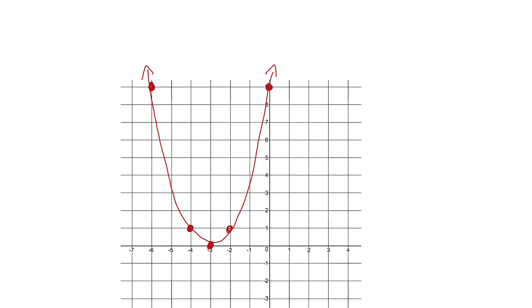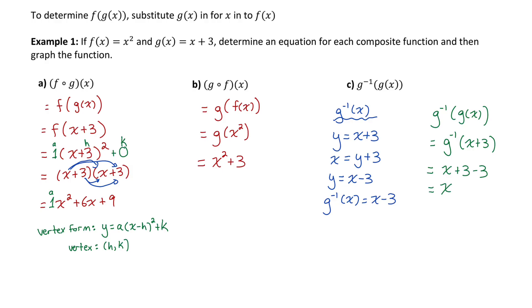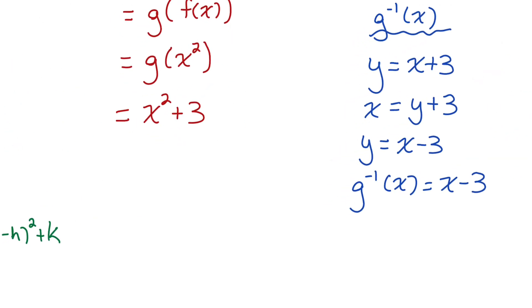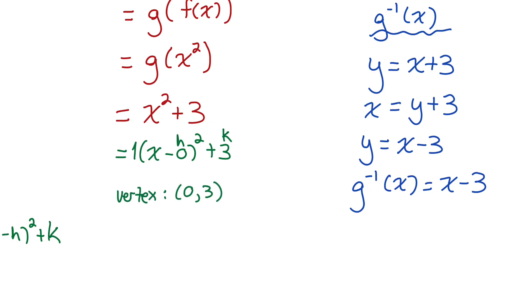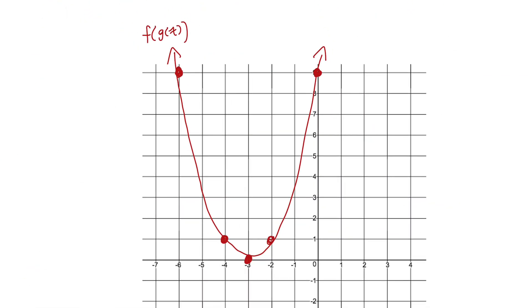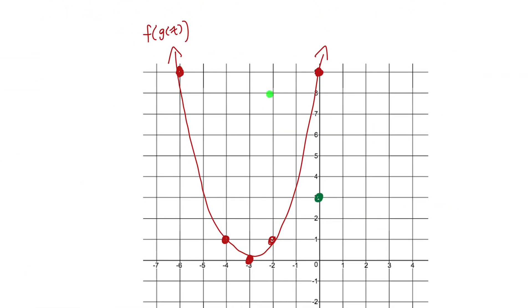That was the graph of f of g of x. Now let's graph the second one, g of f of x, which is the quadratic x squared plus 3. If I write that in vertex form, it becomes x minus 0 squared plus 3, so the h value is 0 and the k value is 3. The vertex is at the point 0, 3. Because the a value is 1, I know it opens up. So I'll graph that with the vertex at 0, 3 opening up.